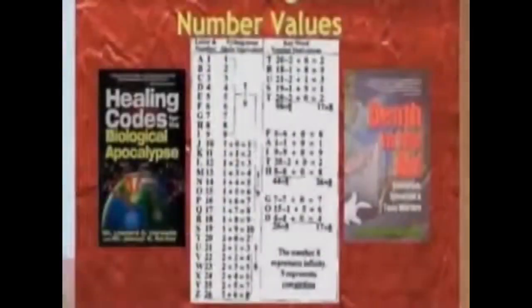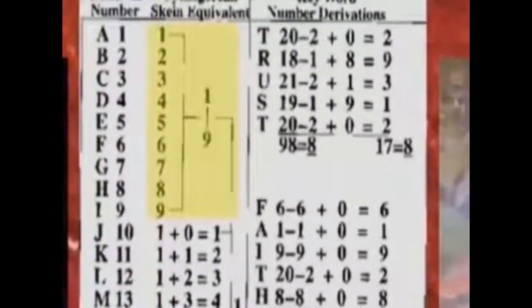The alphanumerics, alphabet numbers of the English language, one through 26. But we talked about earlier, there's only nine numbers, so you've got to use the Pythagorean mystery school math method of reducing the double digits into the single digit integers.